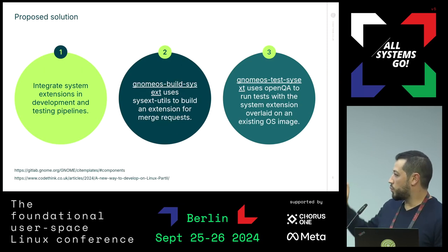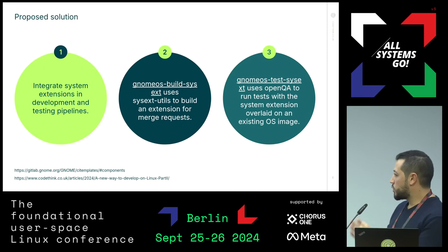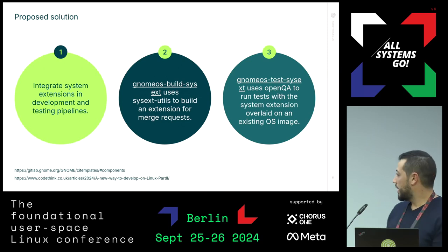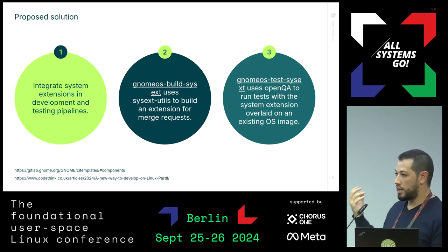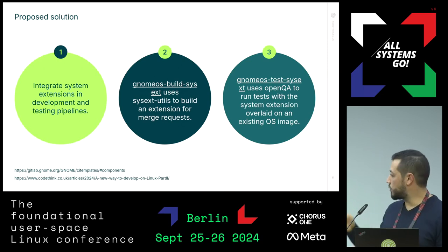We integrate these system extensions into the development and testing pipelines. So whenever you open a merge request, you can have a sysext build that you can download and test locally. And we can overlay this sysext in CI to run the tests using OpenQA.